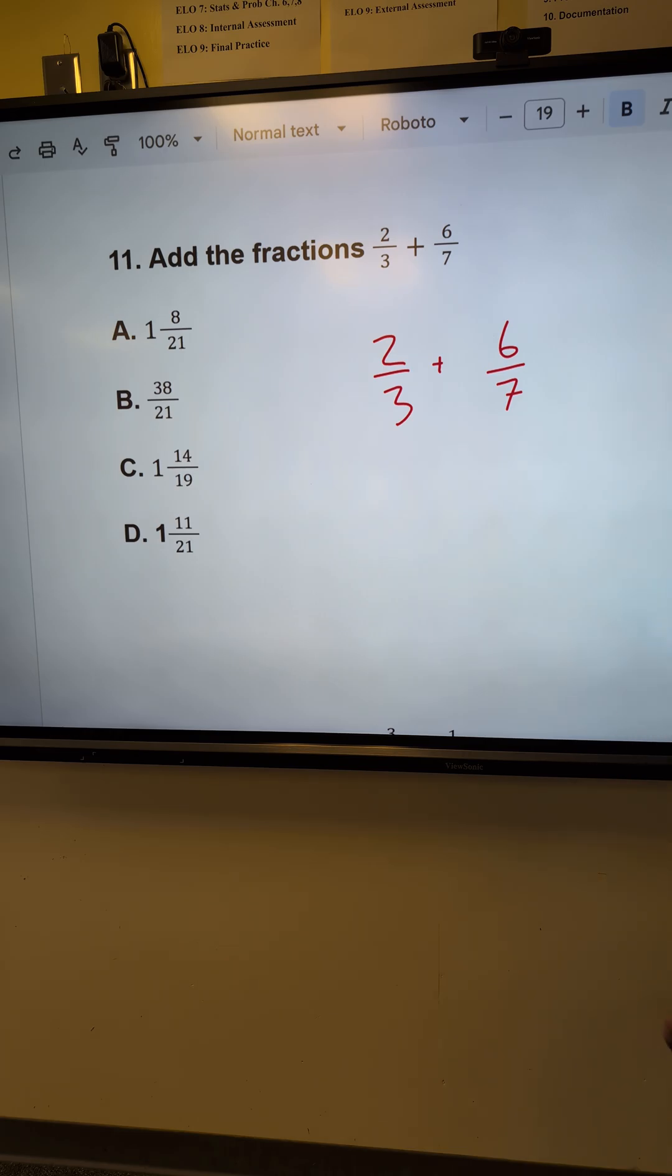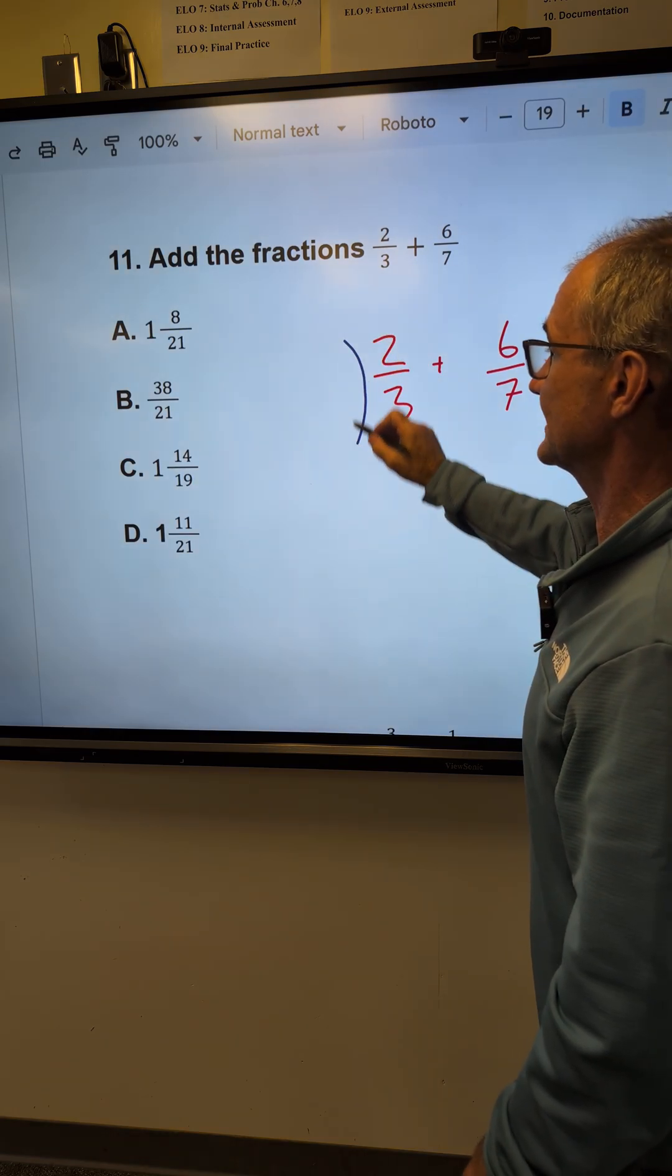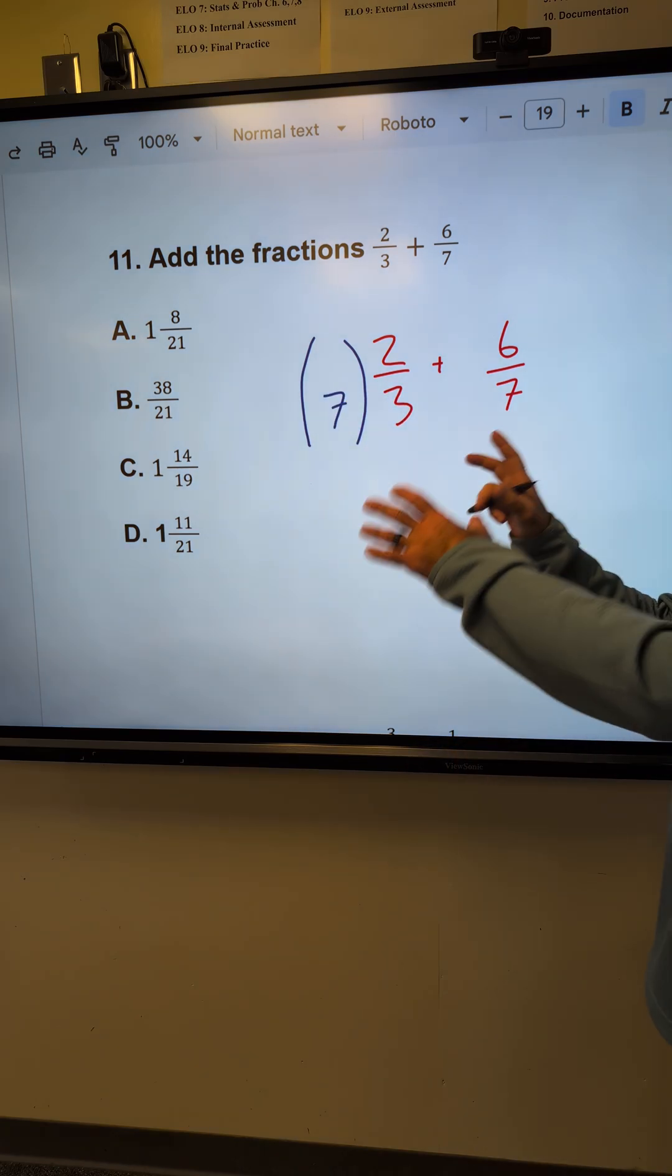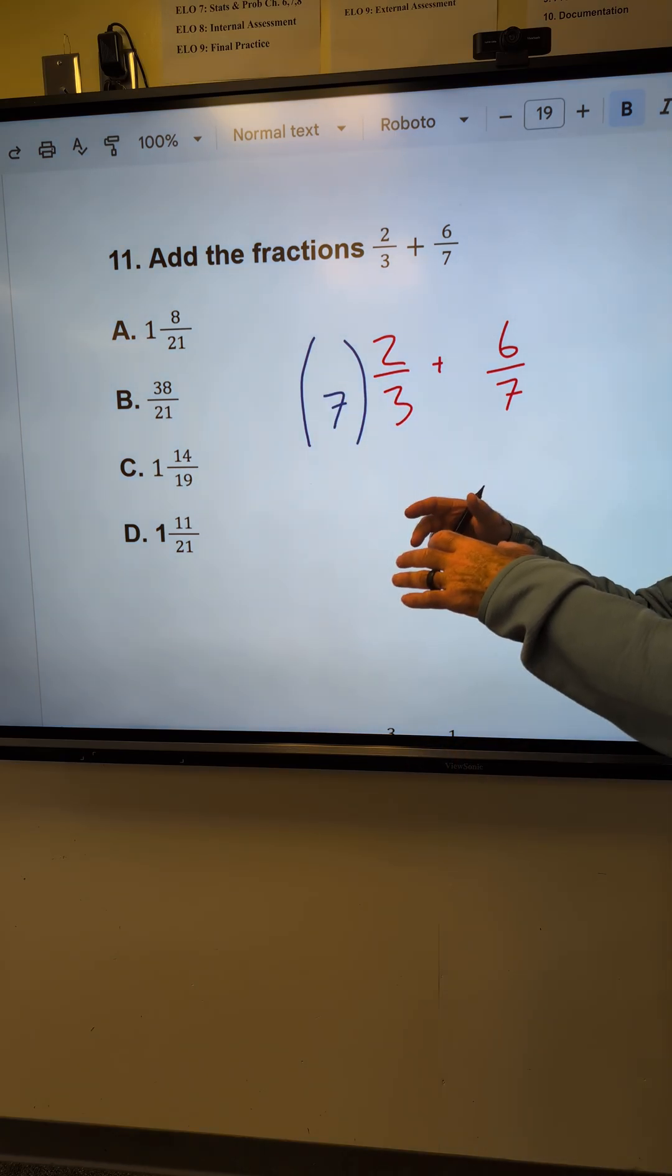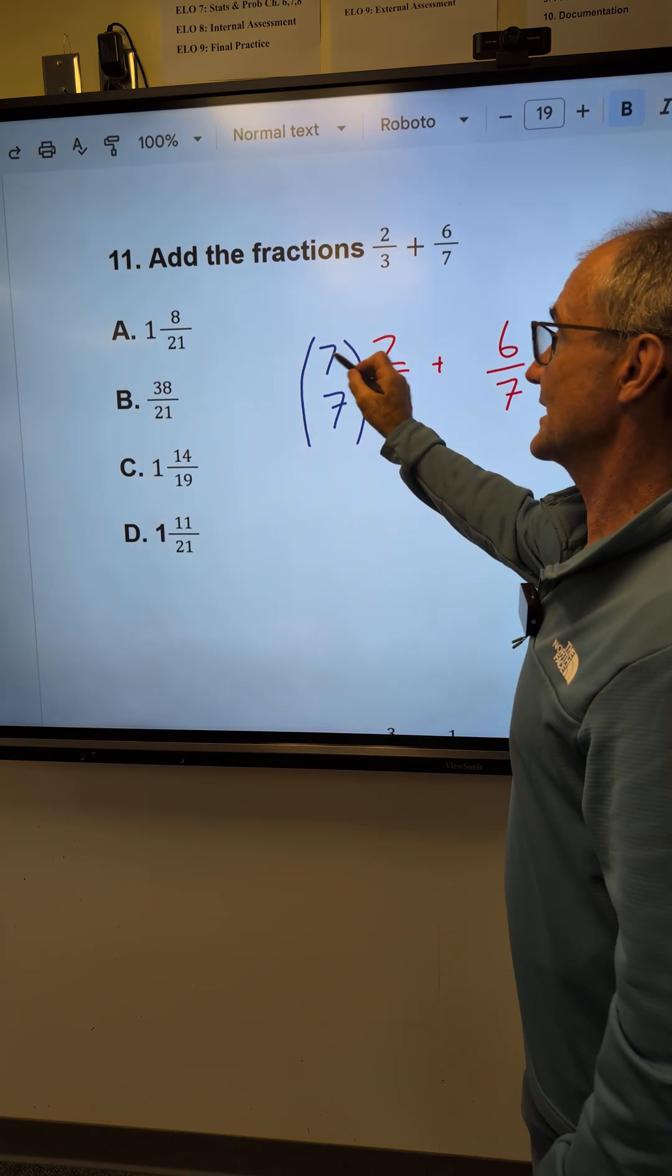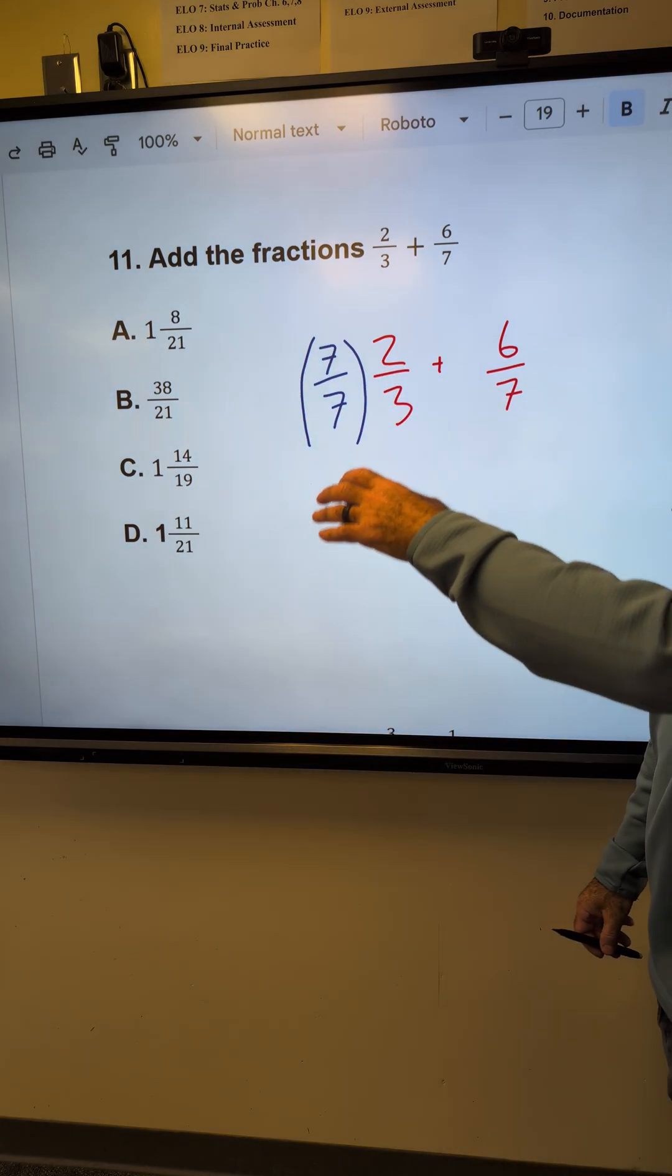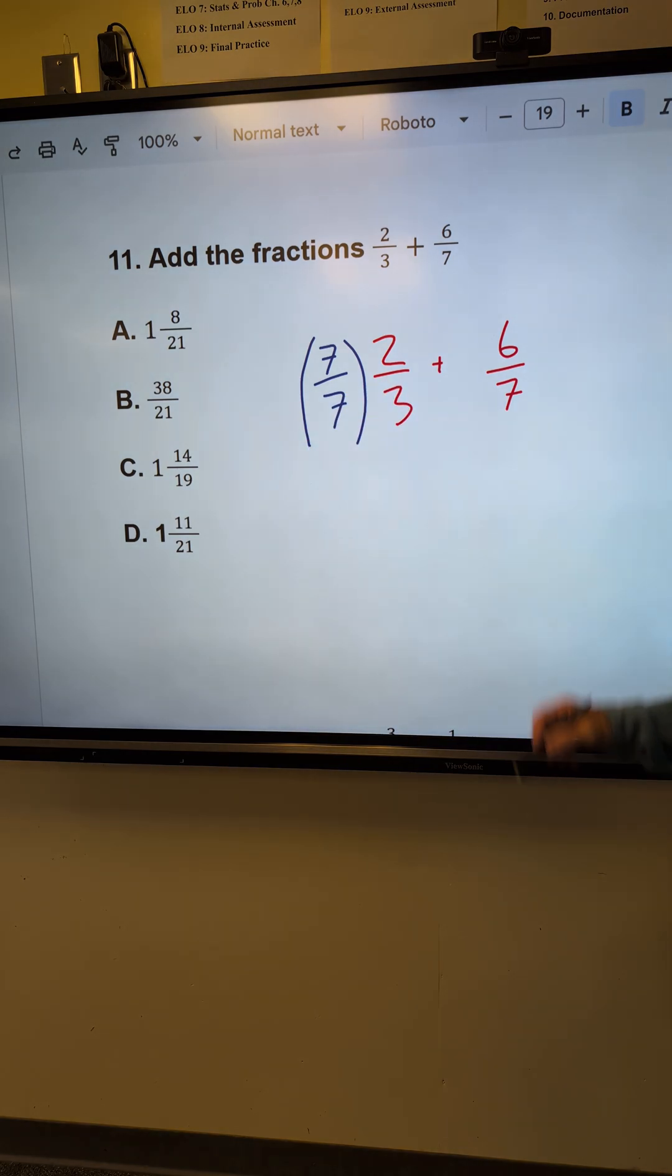So the way I do this is I have to get this to a twenty-one in the denominator, so I have to multiply it by a seven. I can't just multiply something by seven, it'll change the value. So I could only multiply by a factor of one. This thing is seven divided by seven, one. So when I multiply by one, it doesn't change the value.